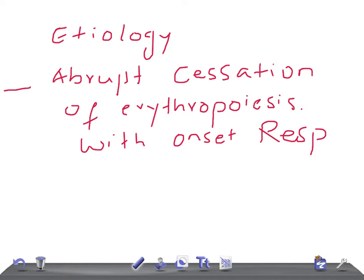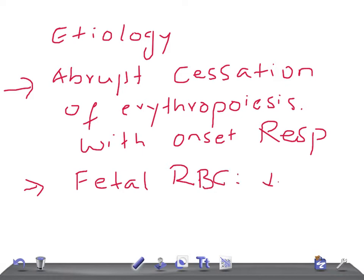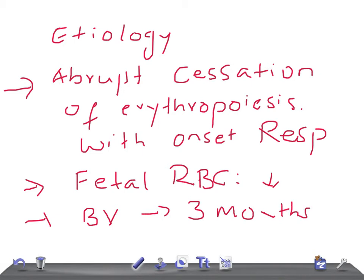Another reason for this physiological anemia is that the fetal RBC lifespan is low. Our normal RBC survival is 120 days, but fetal RBCs have a shorter lifespan, so they undergo early degradation and are destroyed by phagocytes in the spleen, resulting in anemia. A third cause is the expansion of blood volume in the first three months.